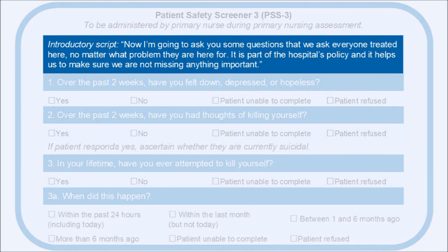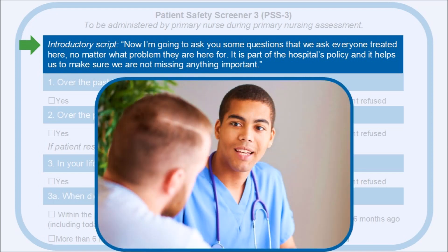Now let's look at each element in the PSS-3 tool separately so you can see how the screener helps you better identify suicidal risk in your patients. It is important to introduce the screening in a way that helps the patient to understand its purpose and to normalize questions that might otherwise seem intrusive. A nurse might introduce it in the following way: "Now I'm going to ask you some questions that we ask everyone treated here, no matter what problem they're here for. It is part of the hospital's policy and helps us to make sure we are not missing anything important." This introduction helps to explain that because this screening is performed with all patients, no one patient is being singled out.